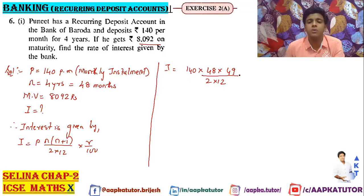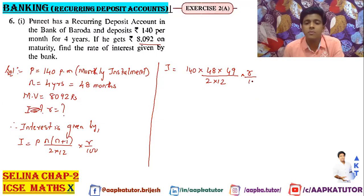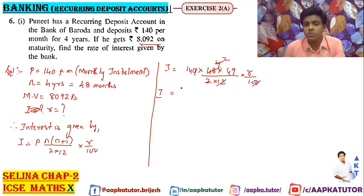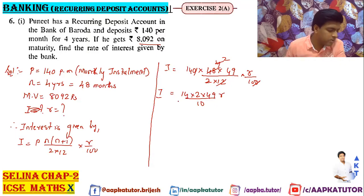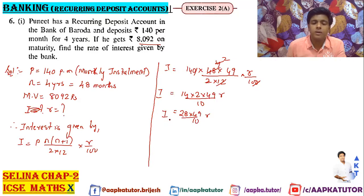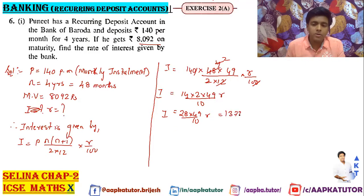So you have to find the interest value — basically you have to find the rate of interest. Now I is equal to: write 12 and 48. 48 divided by 2 gives 24; 24 divided by 12 gives 2. So in the denominator you cut a zero here, leaving 14 × 2 × 49 × r / 10. Multiplying: 28 × 49 upon 10 × r.